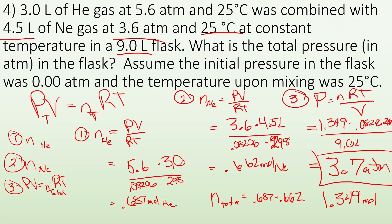So it's a three or four part question. First part: solve for moles of helium. Second step: solve for moles of neon. Then figure out total moles. Then use PV = nRT one more time to get the final pressure.